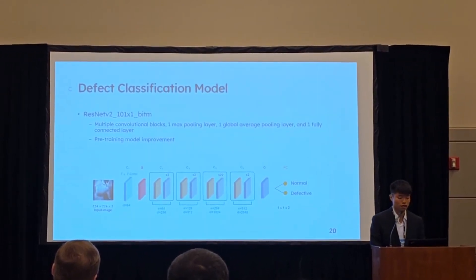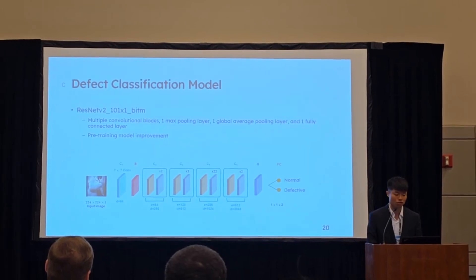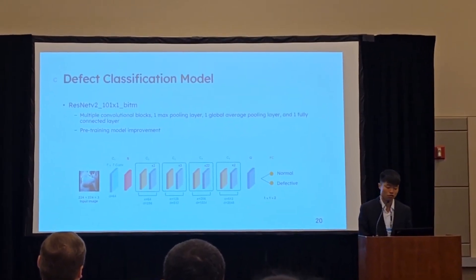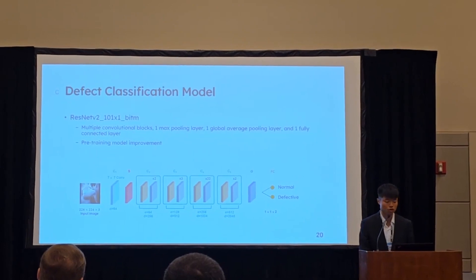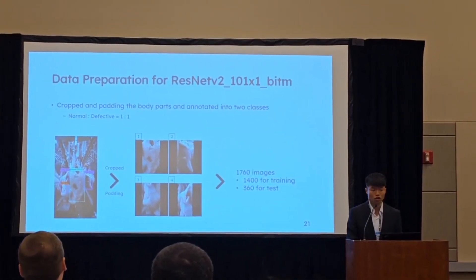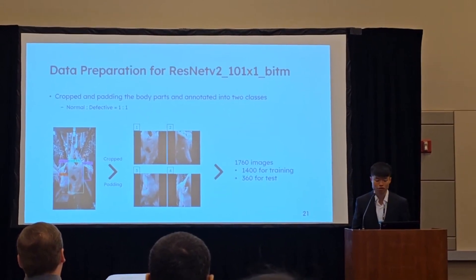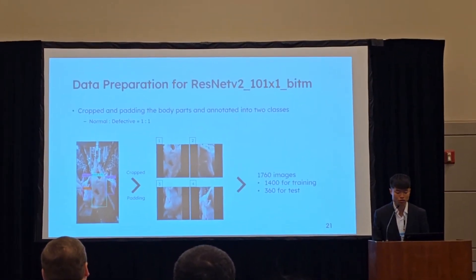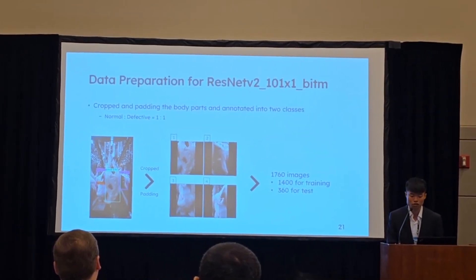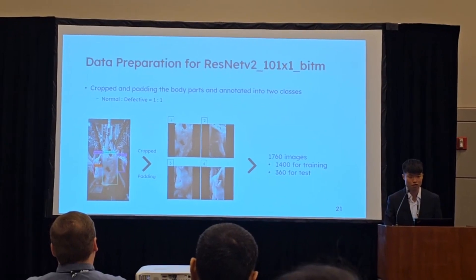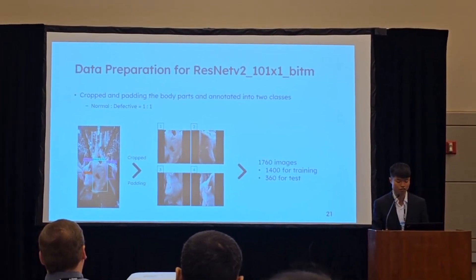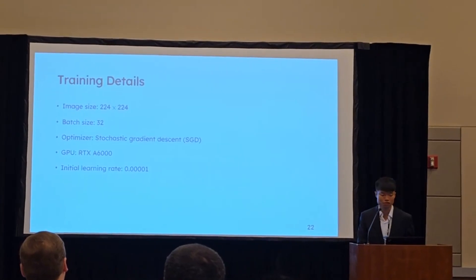Next is the defect classification model. I use the ResNet V2-101 with BiT-M model. The model is composed of multiple convolutional blocks, one max pooling layer, one global average pooling layer, and one fully connected layer, with 101 layers in total. For the data preparation, I crop the body parts detected from the YOLOv7 model and apply zero padding to make them square. I manually annotated them into two classes: normal class and defective class, with a data ratio of 1:1. There are 1,760 images in total, with 1,400 for training and 160 for testing. This is the training details of the ResNet model.